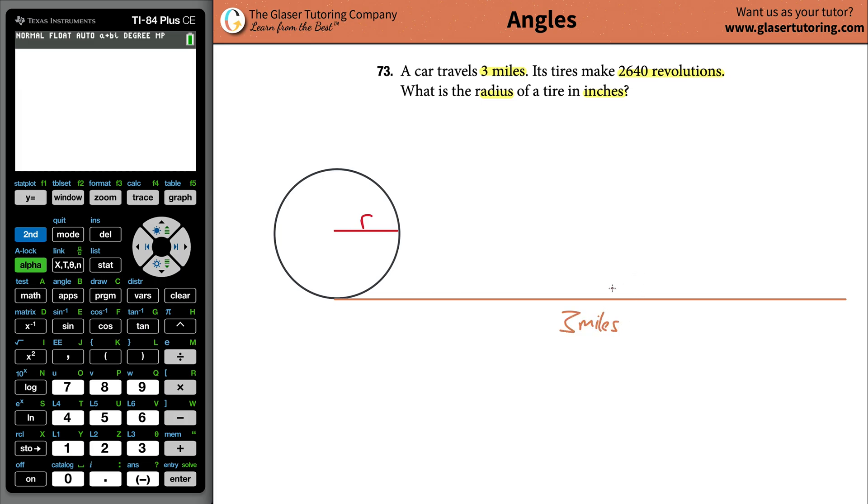Now, we somehow need to connect the radius of the tire to the linear length that this car traveled. They want the radius in inches, but don't worry about that for now.